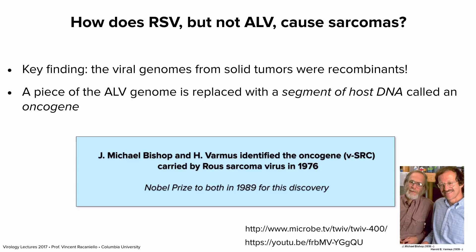In most Rous sarcoma viruses, the cellular gene replaces a viral gene, making those viruses defective. In Rous's original virus, the cellular gene was added to the viral genome so his virus could still replicate and still cause sarcomas. In 1976, Mike Bishop and Harold Varmus at UCSF identified the gene picked up by Rous Sarcoma Virus and called it an oncogene — v-src. They both received the Nobel Prize in 1989.